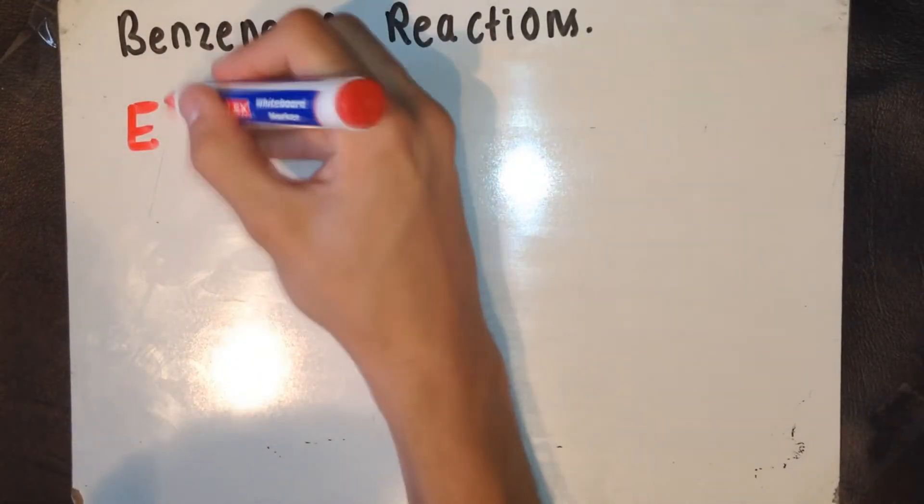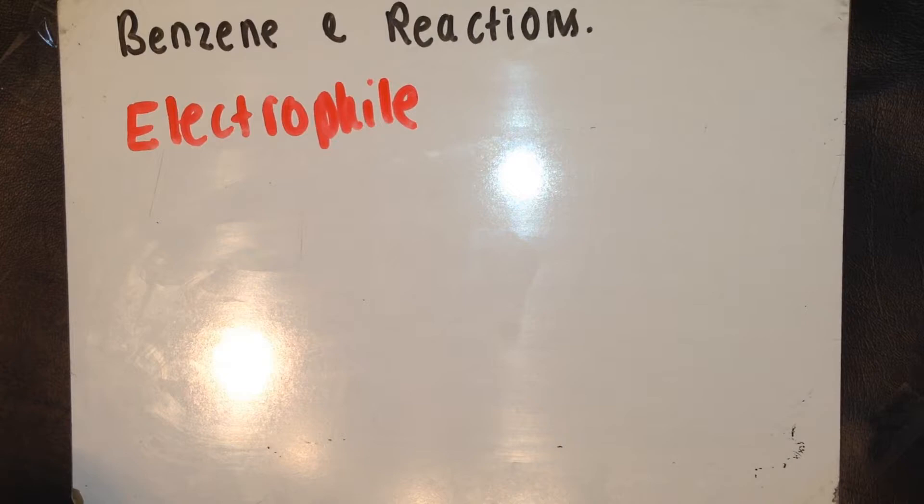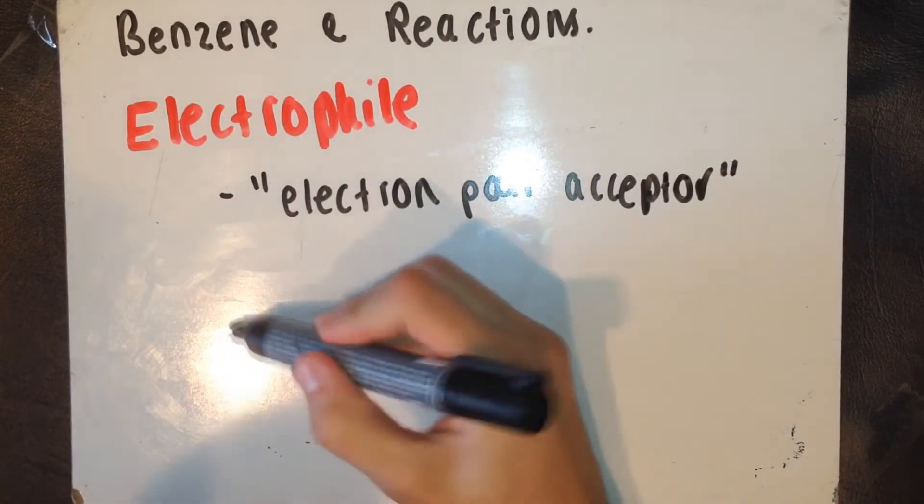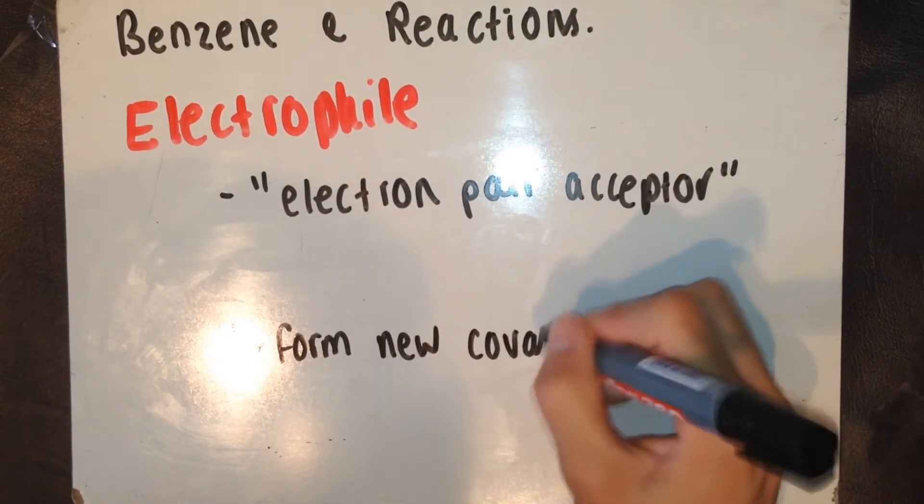An electrophile is an atom, or a group of atoms, attracted to an electron rich centre where it accepts a pair of electrons to form a new covalent bond. So essentially, an electrophile is an electron pair acceptor.